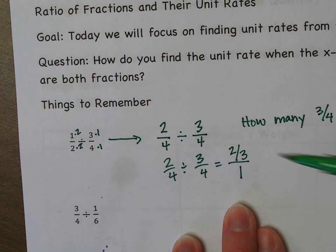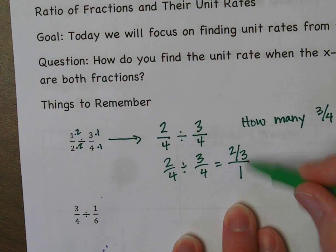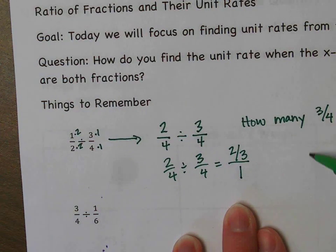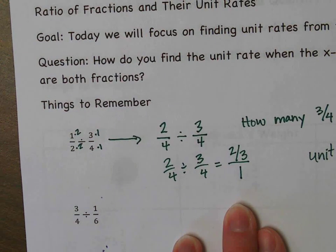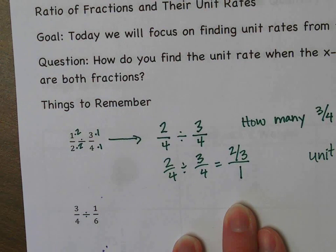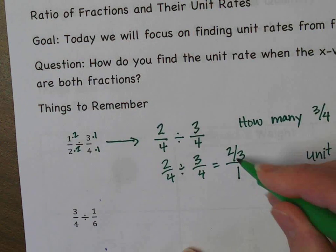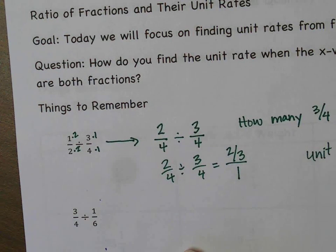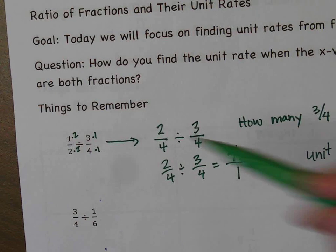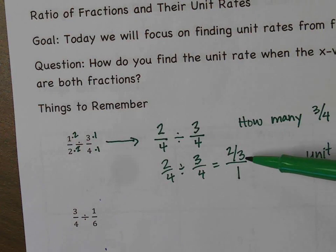So we know that 2 thirds of 3 fourths fit into 1 half. This is our unit rate, because a unit rate means an amount per 1. Do we have an amount per 1? We do — so the unit rate for this problem is 2 thirds.